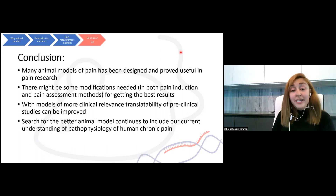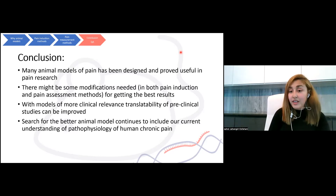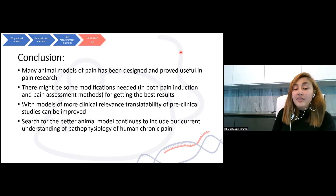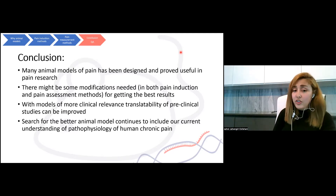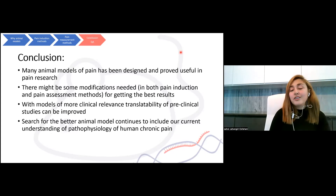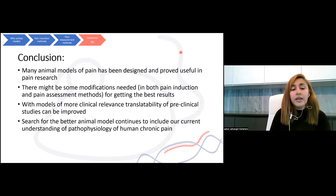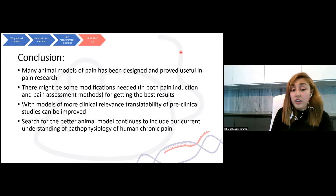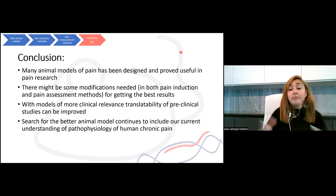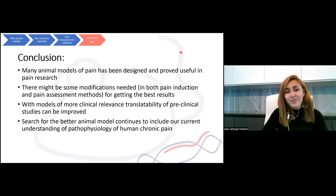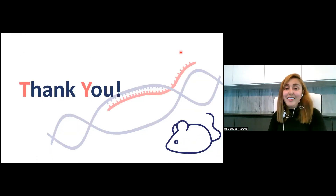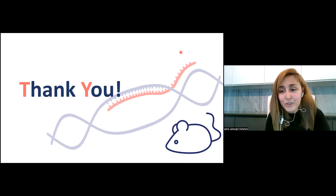In conclusion, many animal models of pain have been designed and proved useful in pain research, but modifications may still be needed in both pain induction and pain assessment methods to get the best results. With models of more rigorous clinical relevance, translatability of preclinical studies can be greatly improved. The search for better animal models continues, incorporating our current understanding of the pathophysiology of human chronic pain to apply in existing pain models or to make new ones. Thank you very much for listening. I'll be happy to answer any questions.